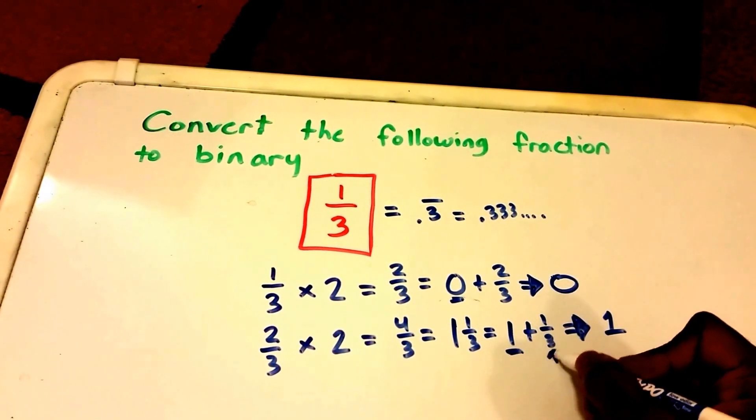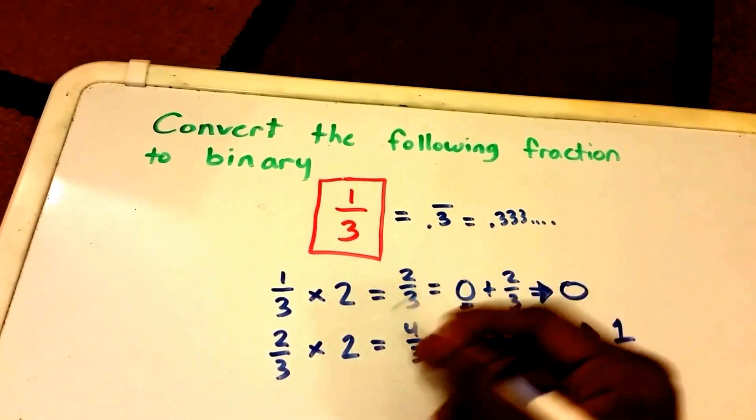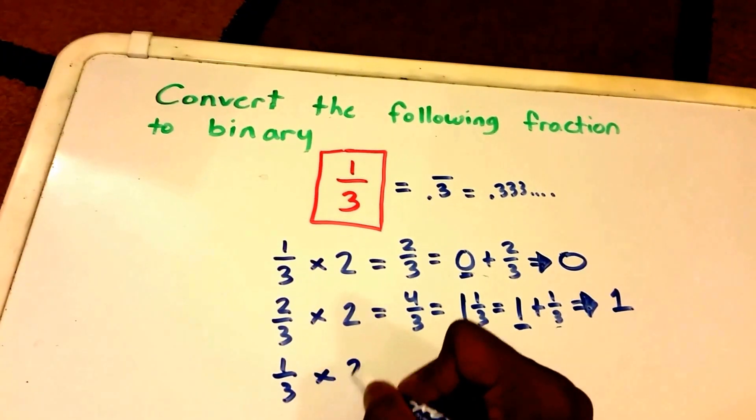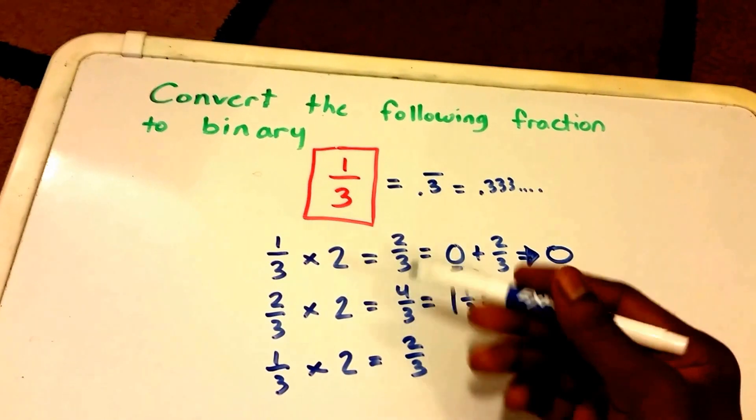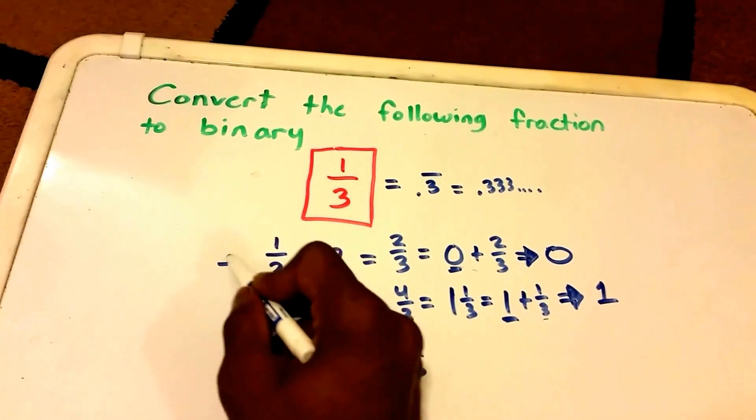Now we take the rest of the fraction, which is 1/3, and multiply that by 2 to get 2/3. Wait a second, we've already seen this before, the first time when we did this.